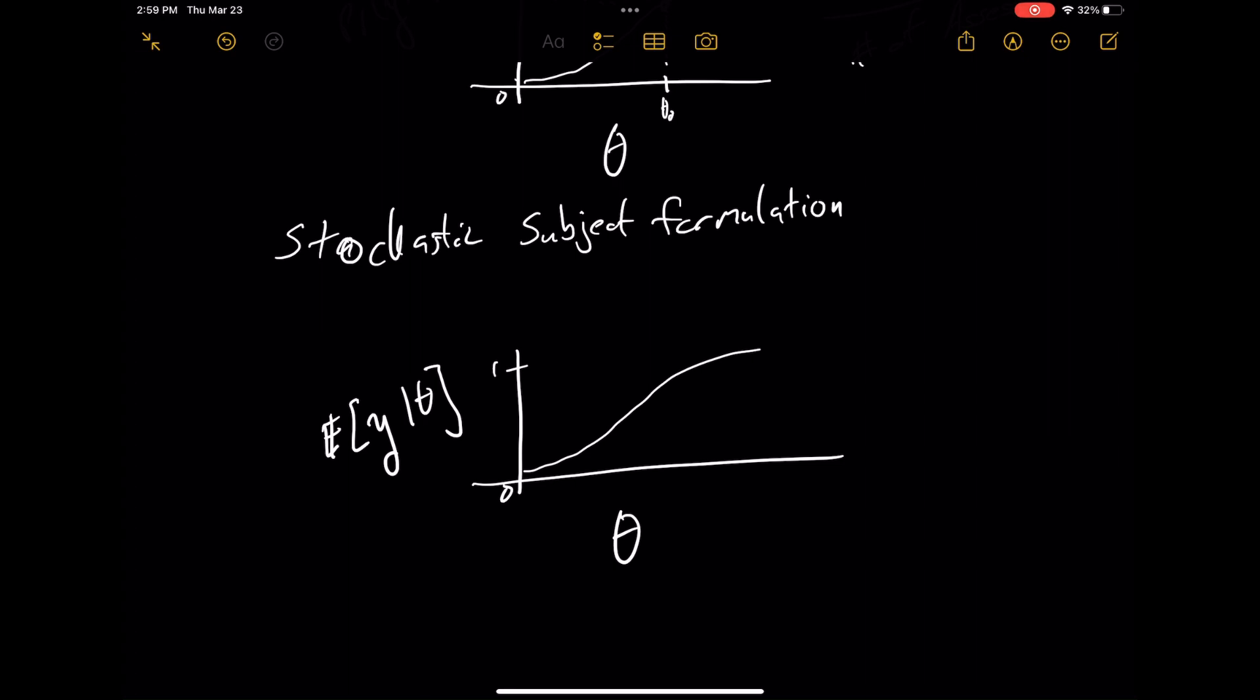We can say for a level of theta, for someone's level or magnitude of the trait, theta naught, what is the proportion of people with that level of trait who will respond? So it's the number of people at theta naught over total people at theta.